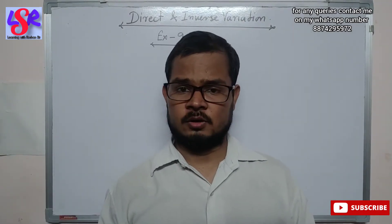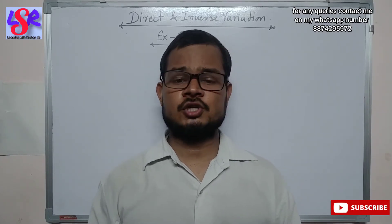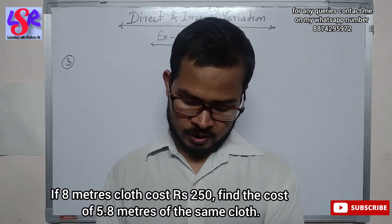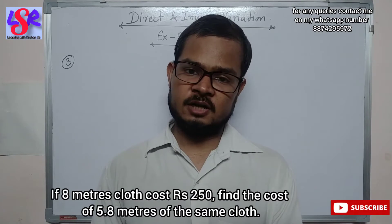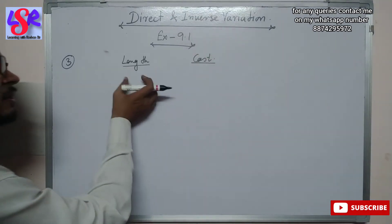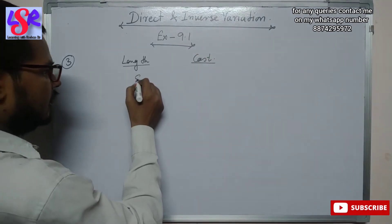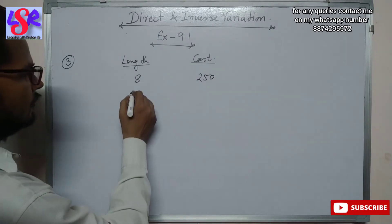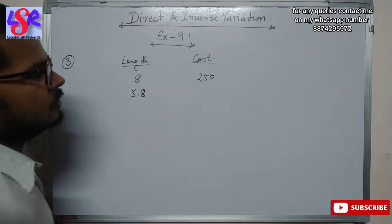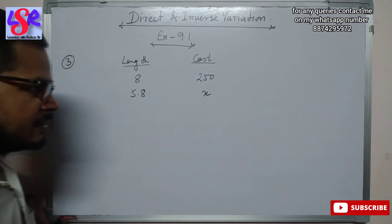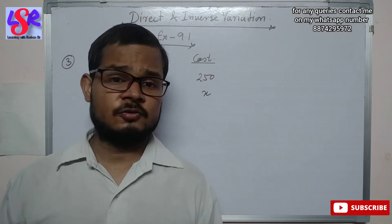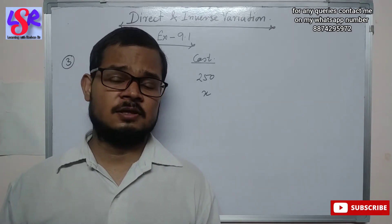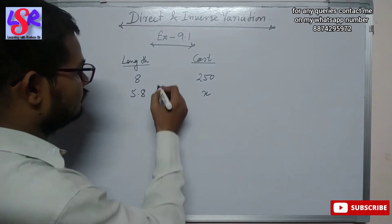Now we start exercise 9.1, question number 3. It says: if 8 meters of cloth cost rupees 250, find the cost of 5.8 meters of cloth. We have two parameters: length and cost. 8 meters costs 250 rupees, and we have to find the cost of 5.8 meters — let that cost be x. Since taking more cloth means paying more, and less cloth means paying less, this is a case of direct variation.